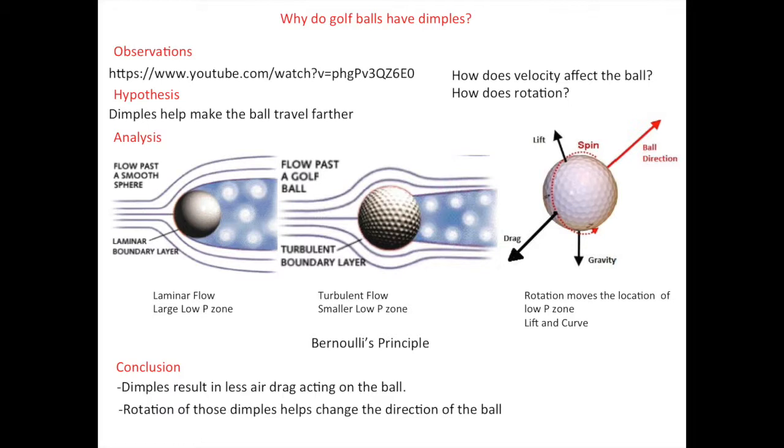This is why so many golf clubs are used. They each make the ball rotate a certain way, causing the ball to travel the way the golfer wants it to travel.